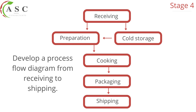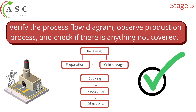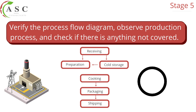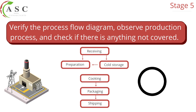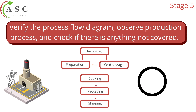Once you have drawn a flow diagram with your team's input, you must verify it. Verification means that the team members walk together and follow the product — confirming: is this really where we receive? Where we store? Where we prepare, cook, pack, and store for distribution? You are confirming that what is written on paper is indeed true. Once all have verified the flow diagram, you sign and confirm it — normally signing the document, including who was present and the date of confirmation. This is how you conduct the preliminary stages of the 12 stages of HACCP.